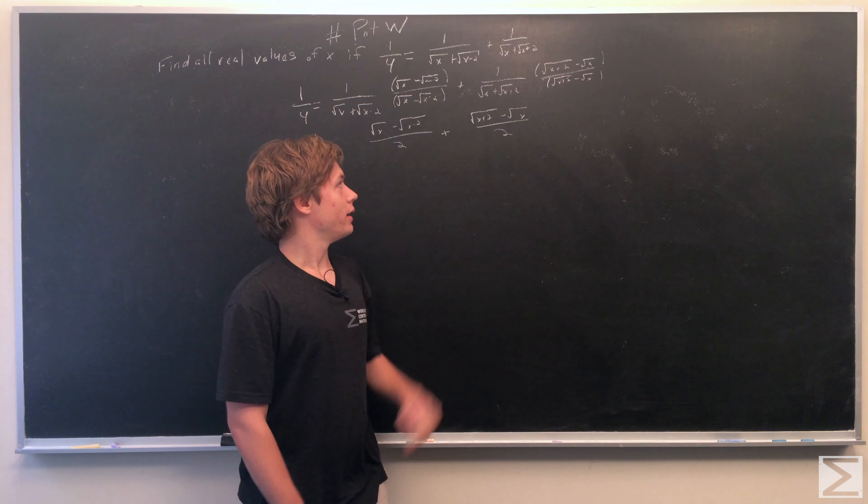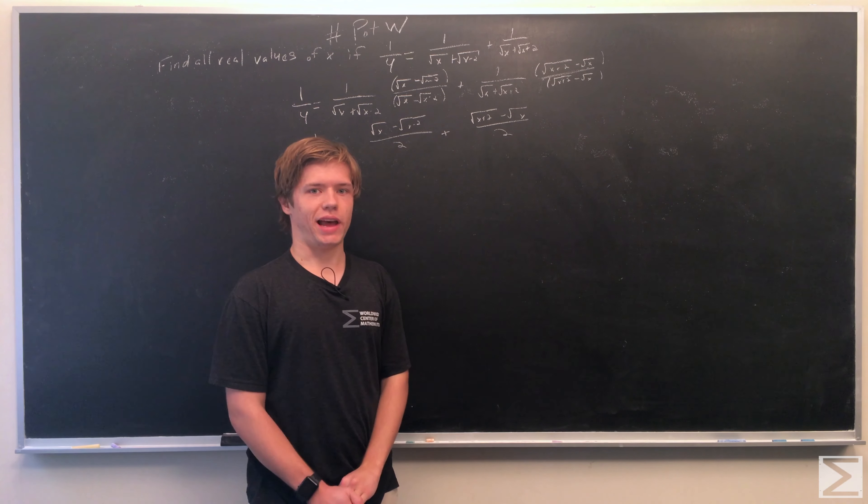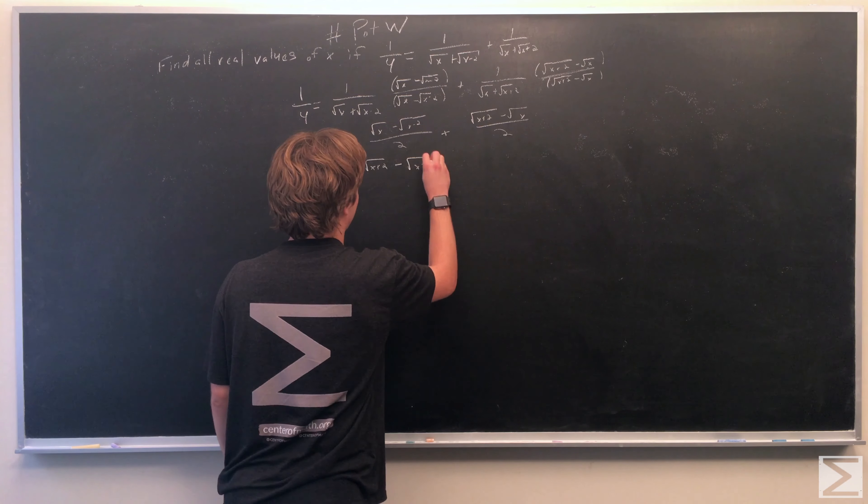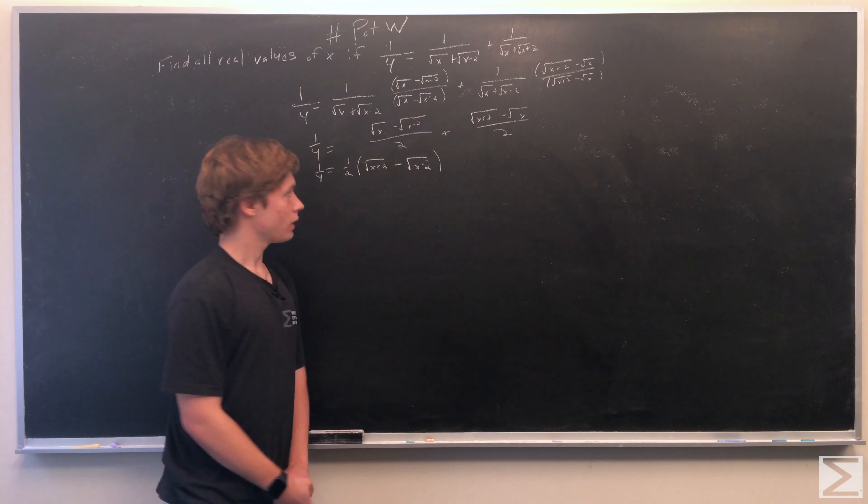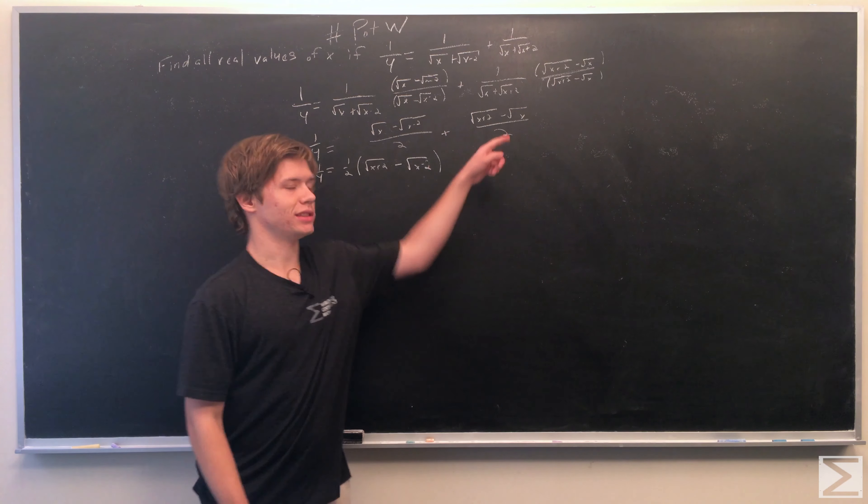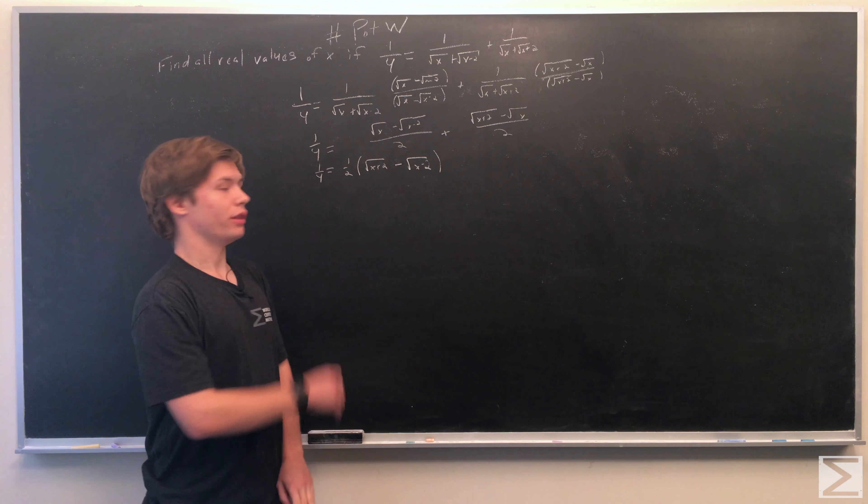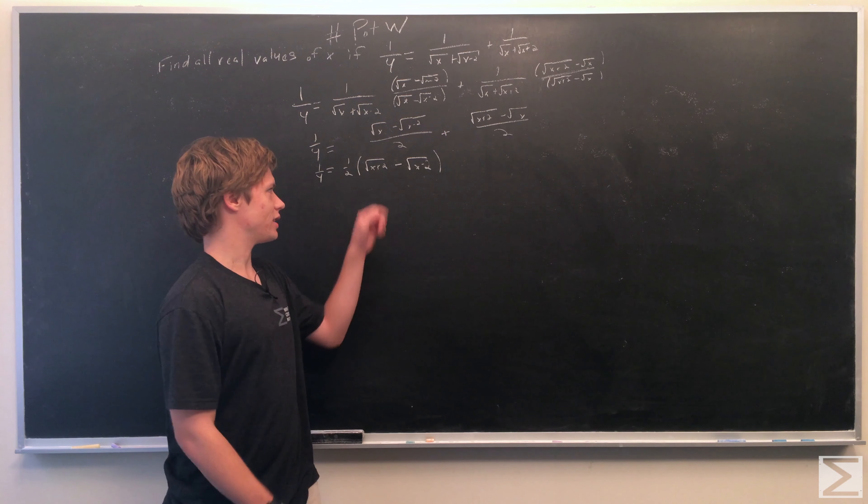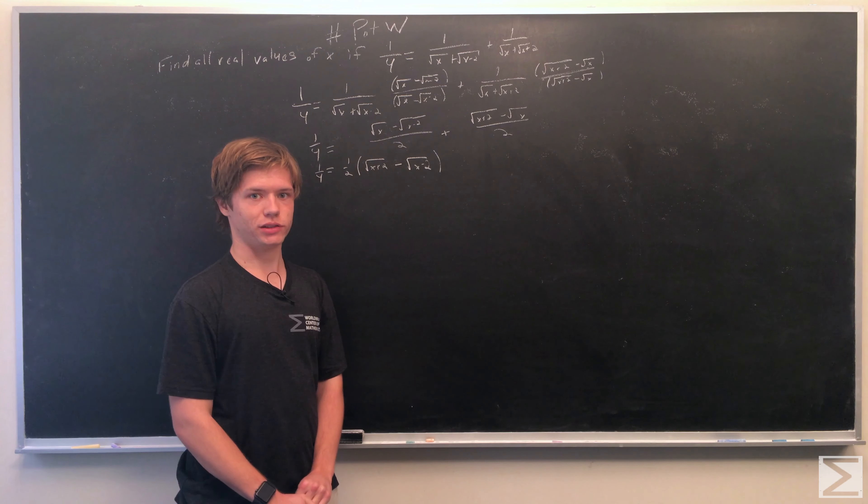Since they have the same denominator, we can add these two together. The √x terms cancel out, and we're left with 1/4 equals 1/2 times (√(x+2) - √(x-2)).